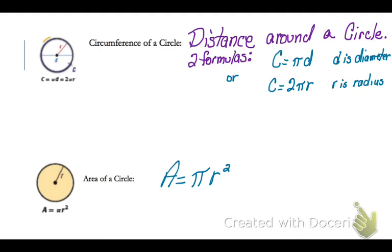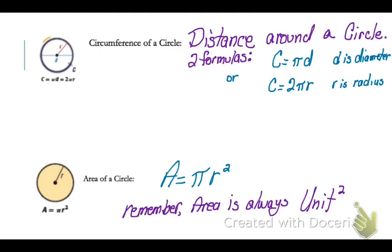To find the area of a circle, we're going to use the formula area equals pi times the radius squared. And remember, on area, your answer is always units squared.